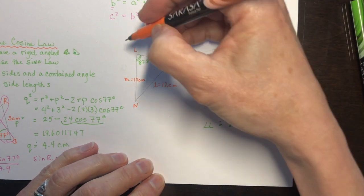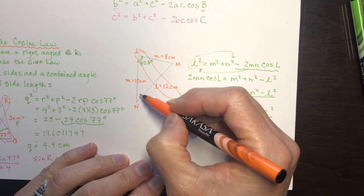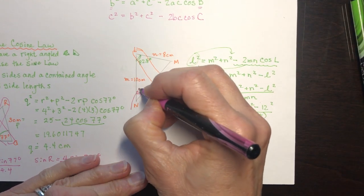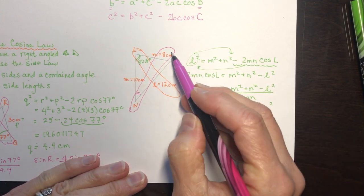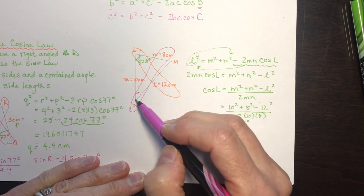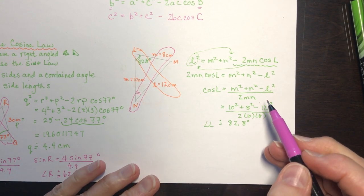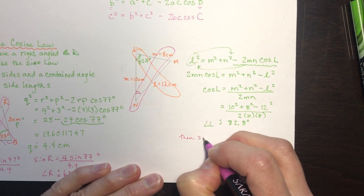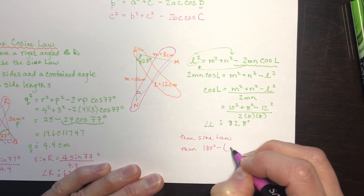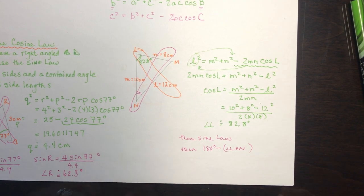Now I have angle L, so I can use the sine law to find angle N. Once I have that, the third angle is 180 degrees minus the sum of the two found angles. The strategy is: cosine law once, then sine law, then sine law, then 180 degrees minus the two angles.